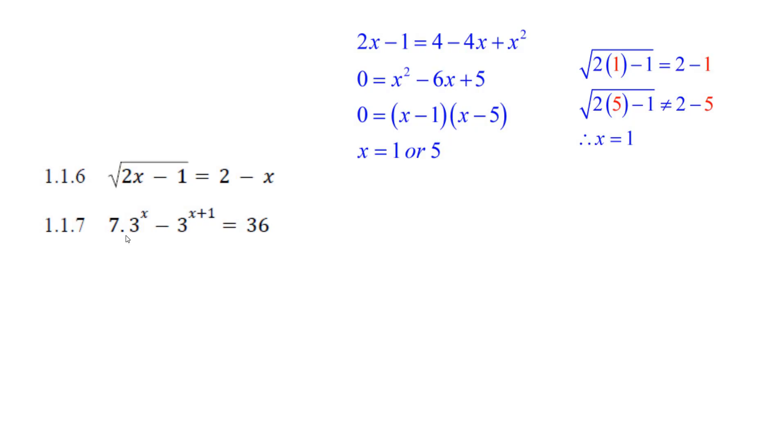Now, 3 to the x is in both of these things. And instead of writing it as 3 to the x plus 1, write it as 3 to the x times 3 to the 1. Now you can see the common factor that we bring to the outside, 3 to the x times 7, 3 to the x times minus 3.